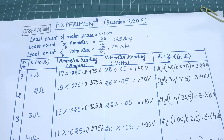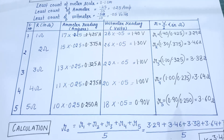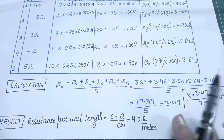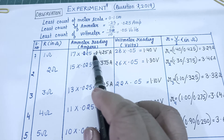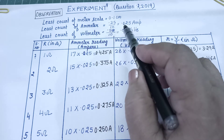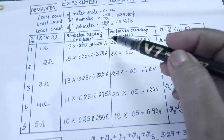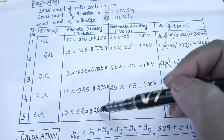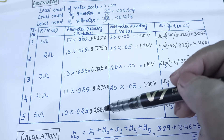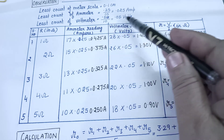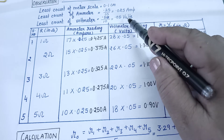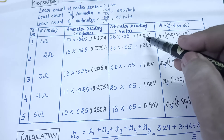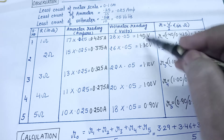First look at the way you are supposed to write the experiment in your experiment copy — in your practical copy of your college and in your exam copy. One very important thing: the least count of the ammeter is 0.025, that is up to 3 decimal places. So you have to write all the readings from the ammeter up to 3 decimal places. If a reading is 0.25, add a zero: 0.250. The reading should sync with the least count of the apparatus. Similarly, the least count of the voltmeter is 0.05 volts, that is up to 2 decimal places — so write 1.4 as 1.40. The reading should sync with the least count.